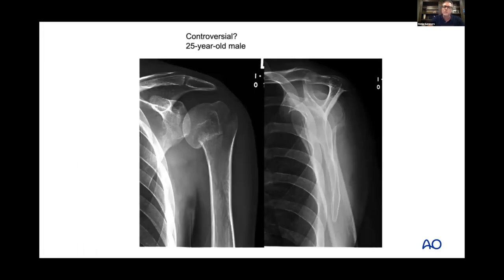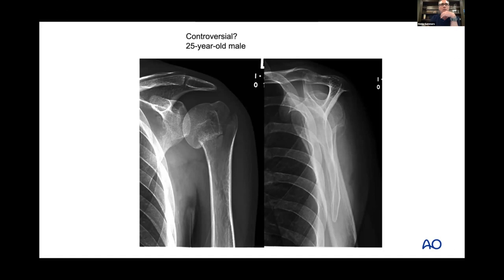This may be controversial: a 25-year-old healthy, active, athletic male with what some would call a minimally displaced varus fracture. But if you calculate his head-shaft angle, he's well below 140 degrees. We know that above 140 they tend to heal well; as varus increases they heal less well and function is not as good. For me this is an indication for surgery in a young, healthy person with a displaced varus fracture.